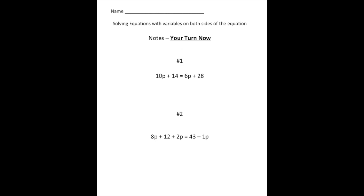So step number one, I'm going to, I can either take away 10P or take away 6P. I'm going to actually take away 6P from both sides. So now we have 4 times P plus 14 equals 28. All right. So now our goal is to solve this P here. So the opposite of adding 14 is take away 14.